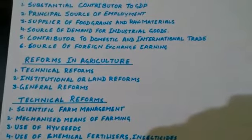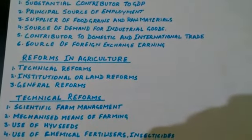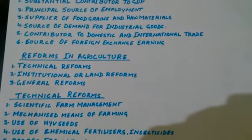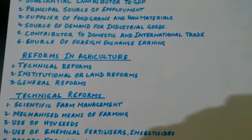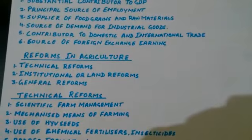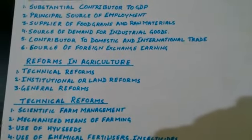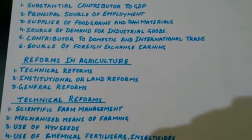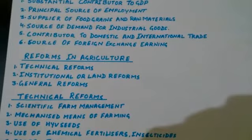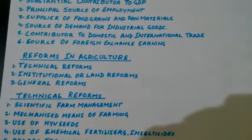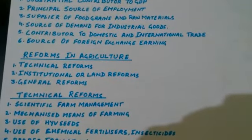Third, agriculture is important because it is the supplier of food grains and raw materials — food grains to the population of India and raw materials to the agro-based industries in India.